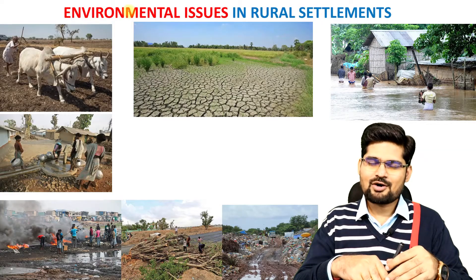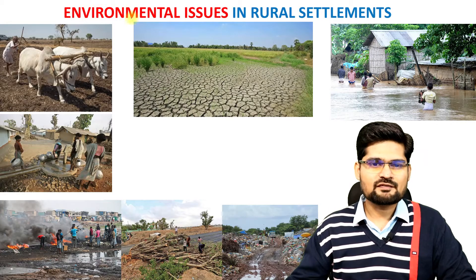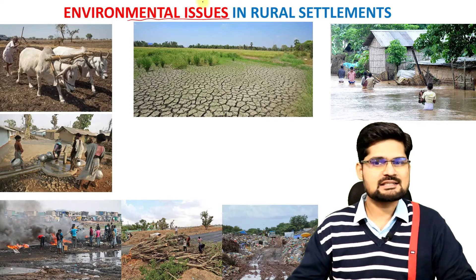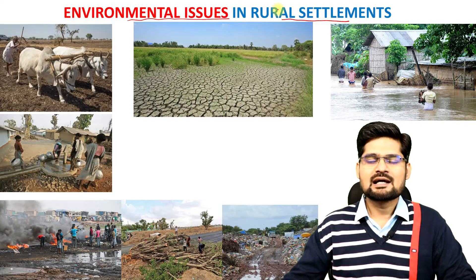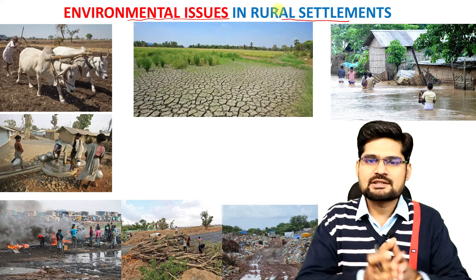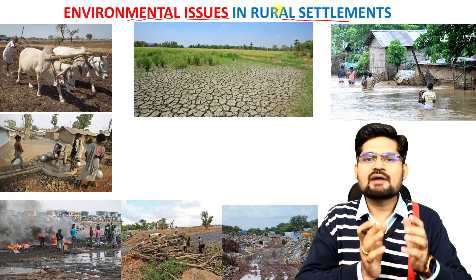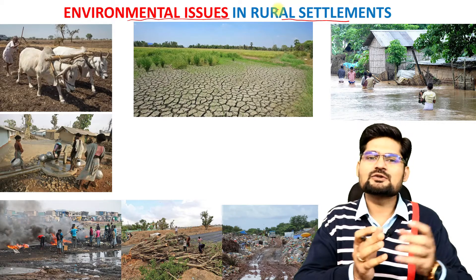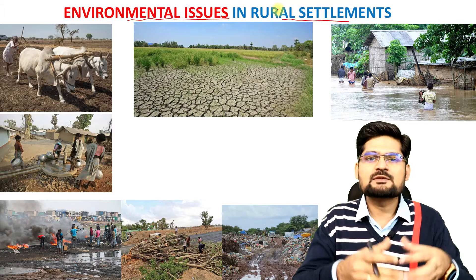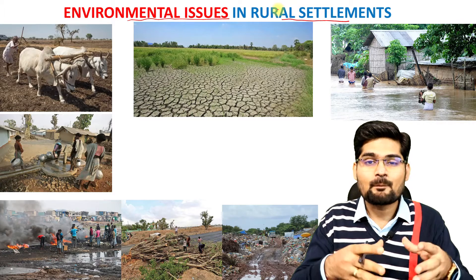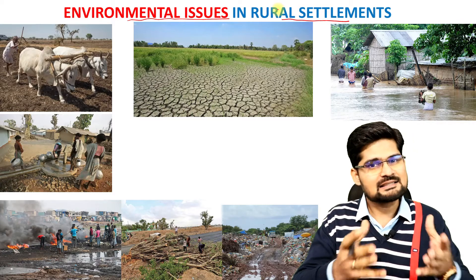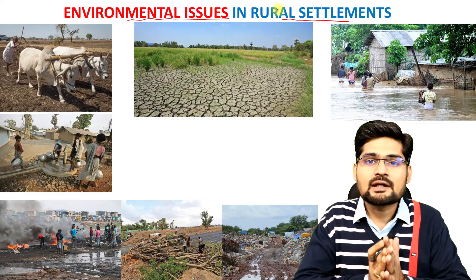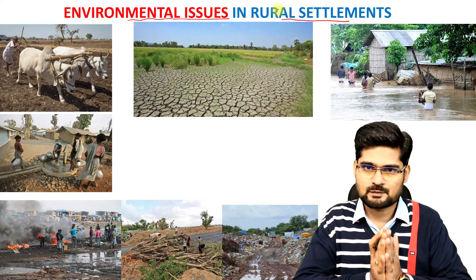Now let's talk about the various aspects of environmental issues, or we say challenges, in the rural settlements. Before this lecture, we have already talked about the factors affecting settlements in rural areas — its various types, patterns, spacing, and compactness. Now, we are looking into the challenges of rural areas especially.